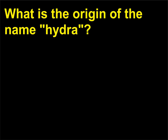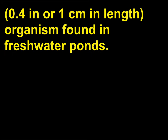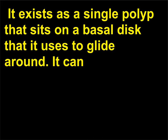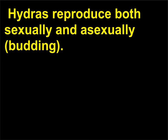What is the origin of the name Hydra? Hydra, a well-known member of phylum Cnidaria, is a tiny organism — 0.4 inches or 1 centimeter in length — found in freshwater ponds. It exists as a single polyp that sits on a basal disk that it uses to glide around; it can also move by somersaulting. It usually has 6 to 10 tentacles, which it uses to capture food. Hydras reproduce both sexually and asexually by budding.